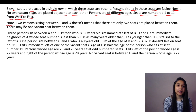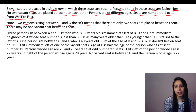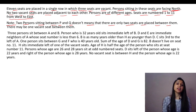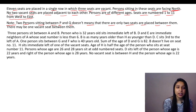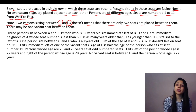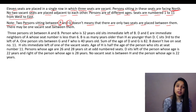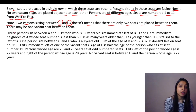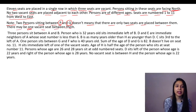There is also a note. It says: 'Two persons sitting between P and Q does not mean there are only two seats between them.' So if P and Q have two persons between them, there may also be one vacant seat between them — meaning there could be more than two seats total between them.